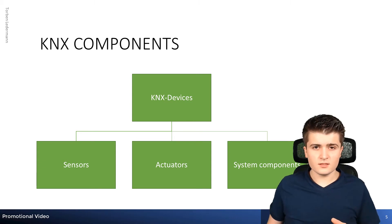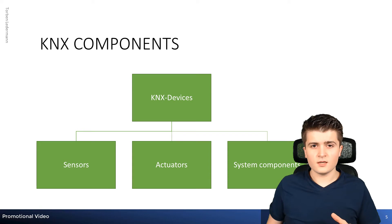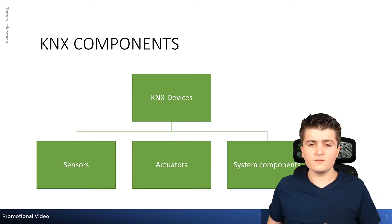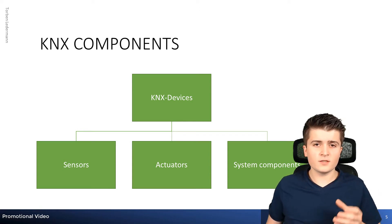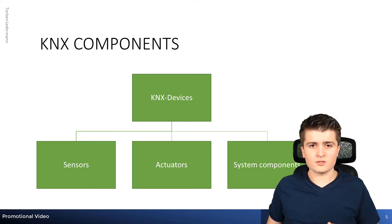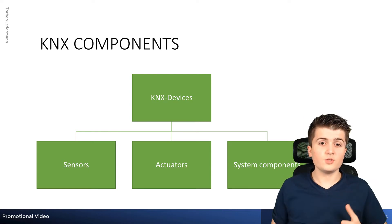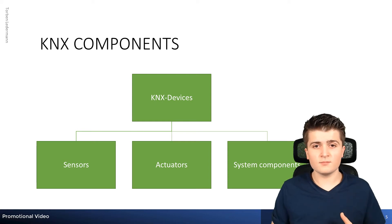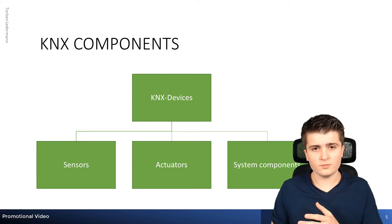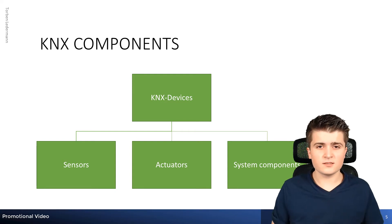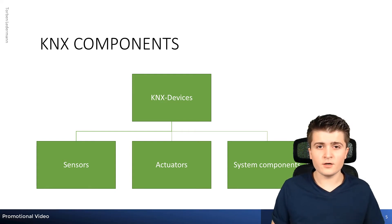Actuators can also perform actions like moving a blind. Then last but not least there are the system components, which are partially required for proper operation of a KNX network, like the power supply. It should be noted that not all KNX devices can be sorted into exactly one of those three groups, because there might be devices that fit into two or even three of them.